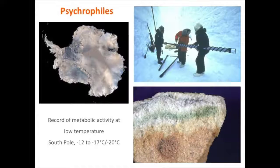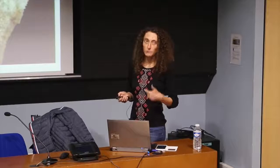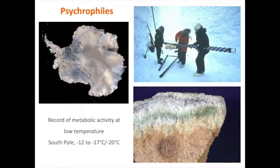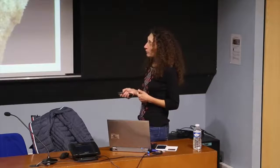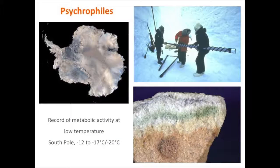At temperatures like minus 15 or minus 20 degrees, you can detect some metabolic activity but not necessarily cell duplication, meaning the whole life cycle is not completed. Organisms show residual metabolic activities — for instance to repair DNA and prevent mutations, or to repair DNA breakages — but they cannot really develop at these very low temperatures. The lowest temperature at which an organism can complete its life cycle is somewhat unclear.